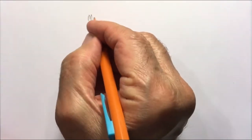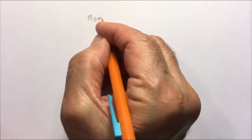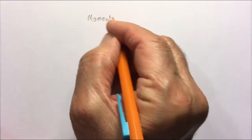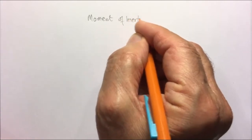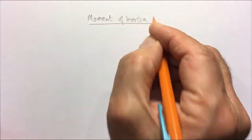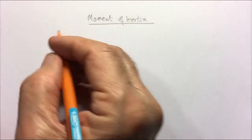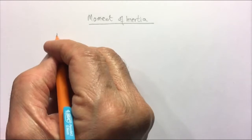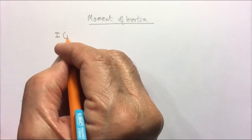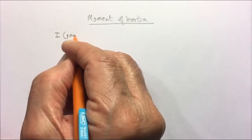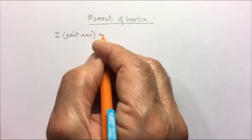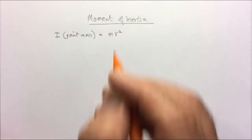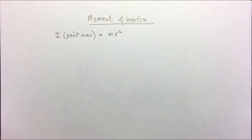Now we look at moment of inertia. We saw already that the moment of inertia of a point mass is mr squared, where r is the distance from the axis of rotation.